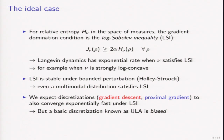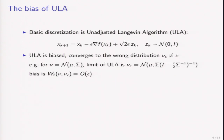By analogy with the abstract theory, we also expect that basic discretizations such as gradient descent and proximal gradient will converge exponentially fast under this log-Sobolev inequality. But in fact, a basic discretization known as the unadjusted Langevin algorithm is biased, so let's see why.